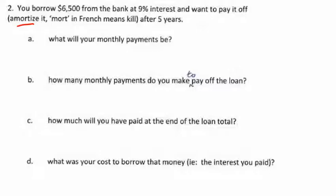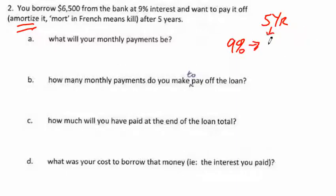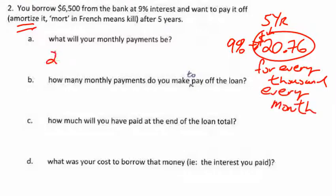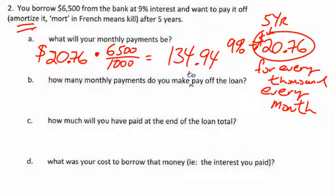Let's do an example. You borrow six thousand five hundred dollars from the bank at nine percent and want to amortize — kill off — the loan after five years. What will your monthly payments be? Look it up in the tables: five years, nine percent gives twenty dollars and seventy-six cents for every thousand. You borrowed six thousand five hundred, so your monthly payment is one hundred thirty-four dollars and ninety-four cents.